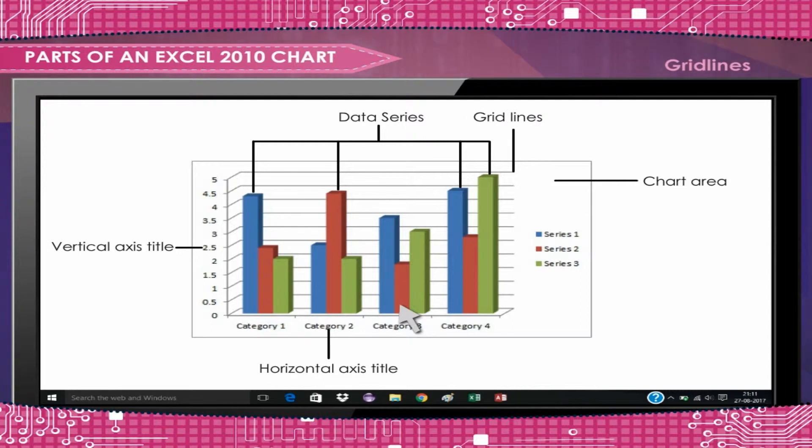Grid Lines: Optional lines extending from the tick marks across the plot area thus making it easier to view the data values represented by the tick marks.